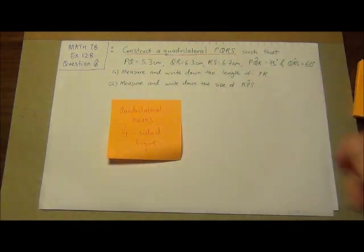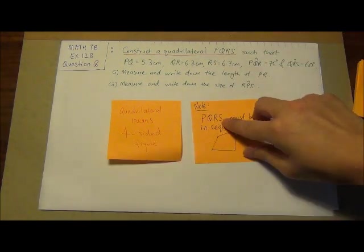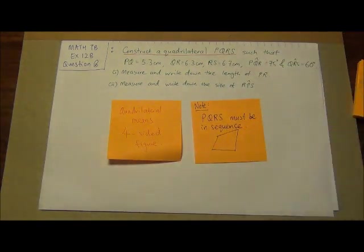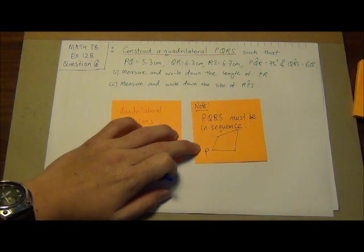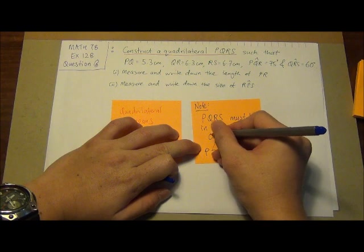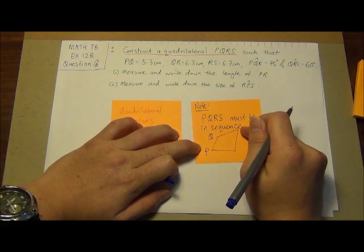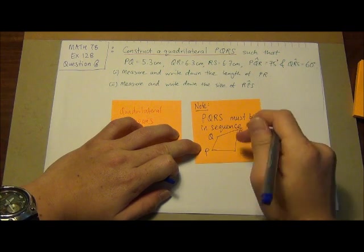Next, so we have all these things. The next thing that you have to note is PQRS must be in sequence. What does that mean by in sequence? If I label here as P, and I want to go clockwise, this one must be Q, this one must definitely be R. It cannot be S.